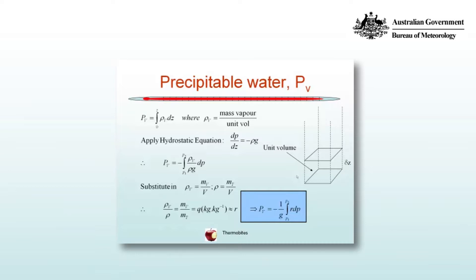We can then substitute for rho V and rho using the definitions of density mass divided through by volume, and the volumes of course will cancel. And we end up with rho V on rho is equal to M V on M T, the total mass of air, which is a definition of the specific humidity in kg per kg.